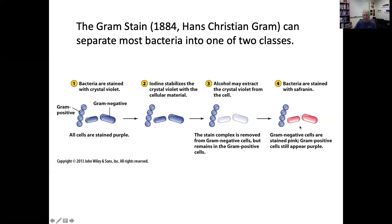So we add another stain — sometimes called the counterstain — safranin. It's a different color than the crystal violet, so we can see the cells that were only stained at this last stage. In this protocol, the gram-positive bacteria are the ones that held on to the original crystal violet, so they are purple. The gram-negative bacteria lost the crystal violet and were counterstained with the pink safranin dye. So gram-positive and gram-negative — this is a differential stain, meaning this staining procedure reveals some structural difference in these two different kinds of cells.